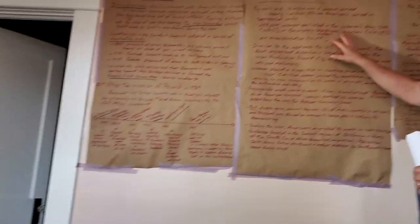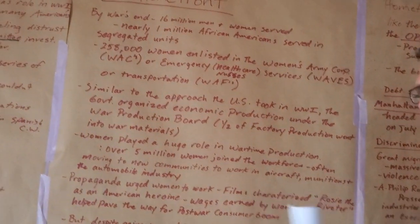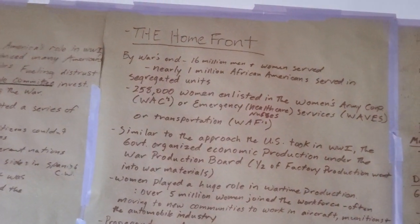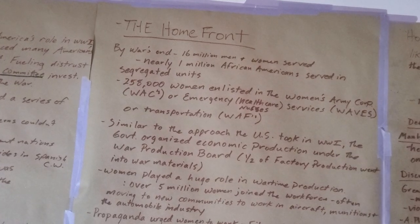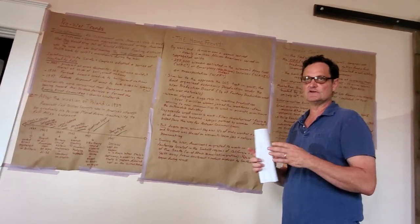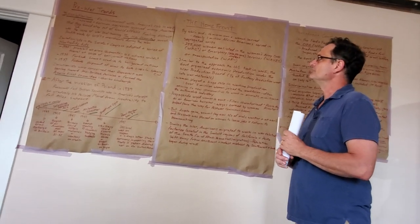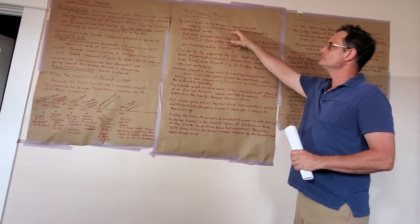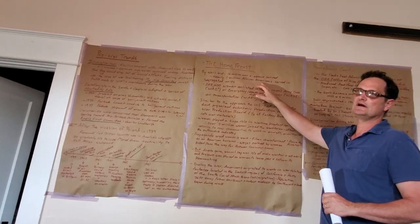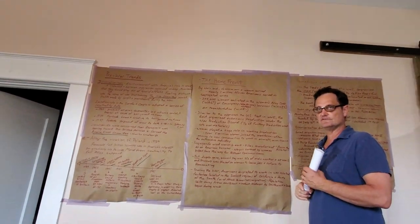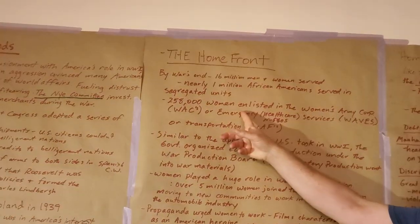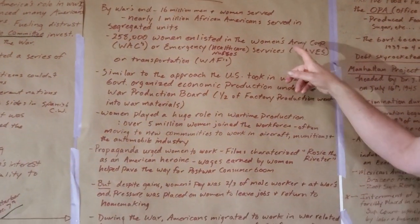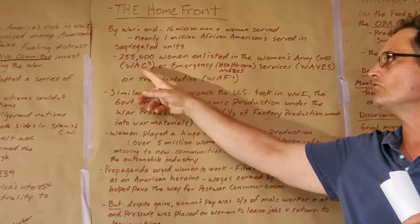You're probably wondering why aren't we talking about Pearl Harbor, Midway, or Guadalcanal. APUSH revised the exam in 2015 and moved away from traditional history — they're focusing on the home front, so that's what we're going to do. By the war's end, 16 million men and women had served in the war. Nearly one million African Americans served in segregated units. 258,000 women had enlisted in the Women's Army Corps — they're not fighting, but doing pretty much everything else. The Women's Army Corps were called WACs.